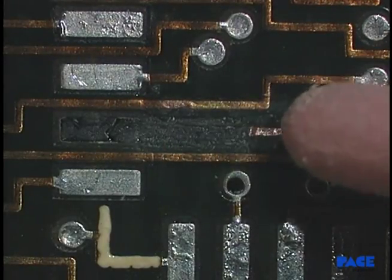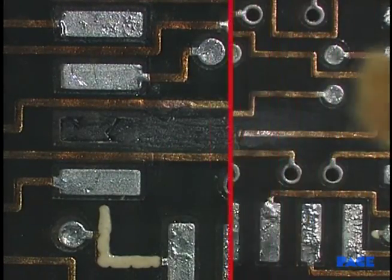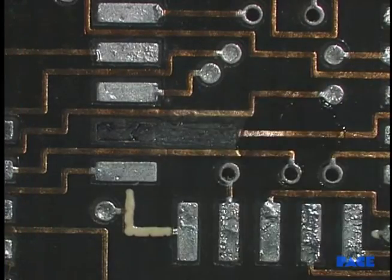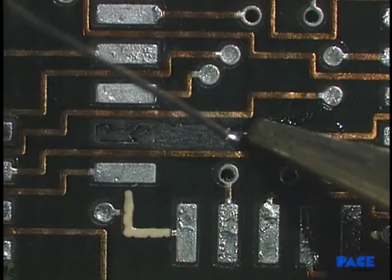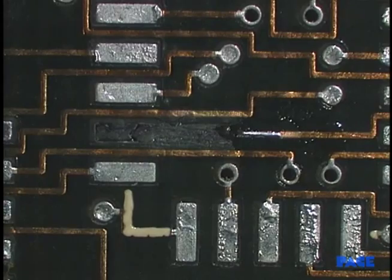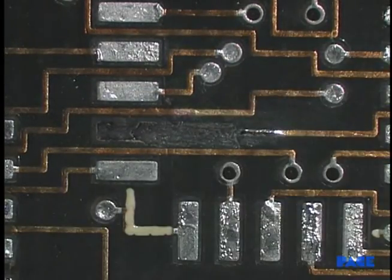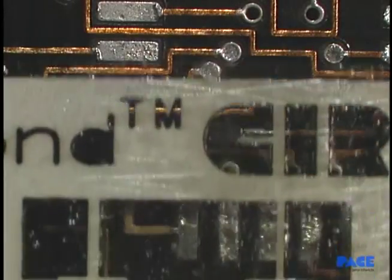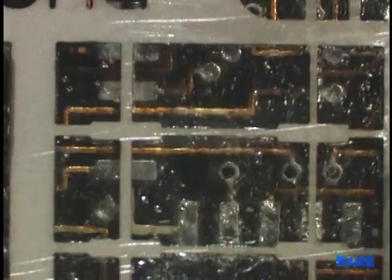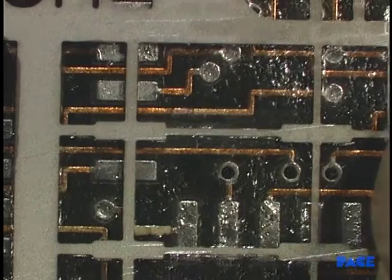Next, remove the oxides and tin the bare copper of the existing trace. Then clean the board. Choose the appropriate replacement land or trace combination from the selected Thermobon frame.